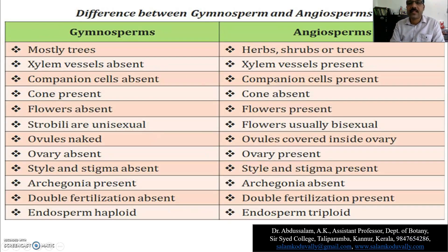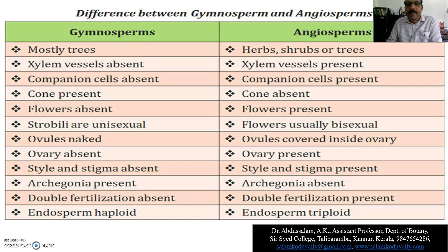You can also see the difference between gymnosperms and angiosperms. Gymnosperms are mostly trees, whereas angiosperms include herbs, shrubs, or trees. That is an important distinction as far as gymnosperms are concerned.